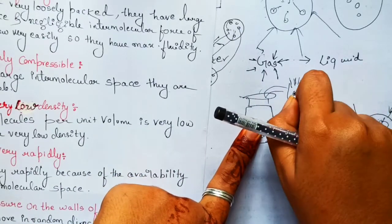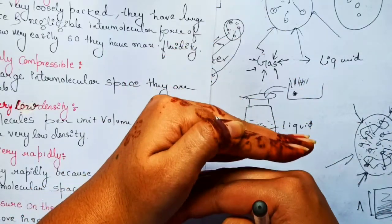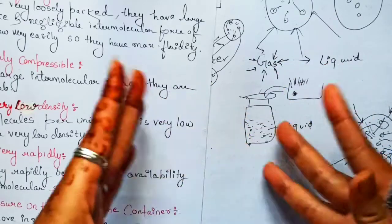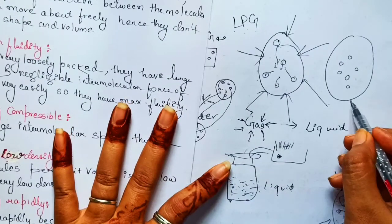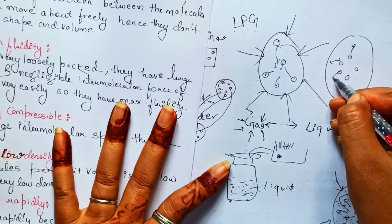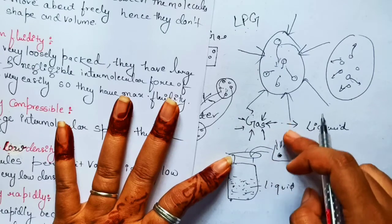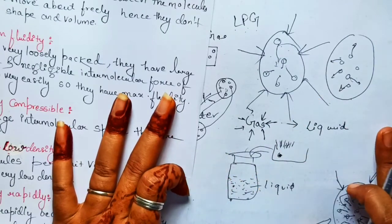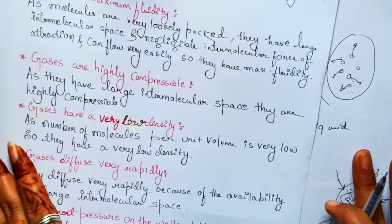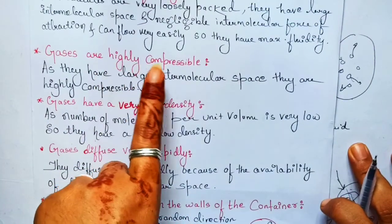When we open the gas knob on the stove, the pressure is reduced. The gas which was stored under high pressure in liquid form inside the cylinder comes out in gaseous form. When you shake the cylinder, you can feel some liquid inside. But when you open the stove knob, gas comes out. So inside the cylinder the gas is in liquid form, and when it comes out the pressure reduces and it returns to gaseous form.